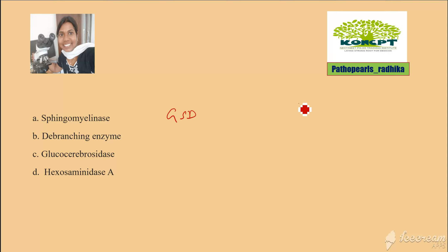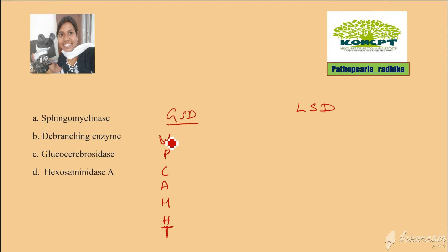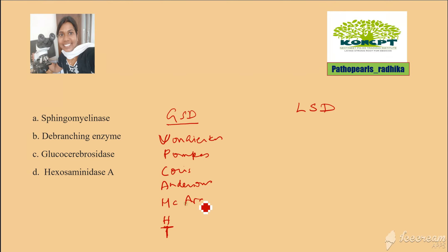You have glycogen storage disorders and lysosomal storage disorders. For glycogen storage disorders, an easy mnemonic to memorize is 'VP came with hypertension.' V is for Von Gierke's disease, P for Pompe's disease, C for Cori's, A for Andersen's, M for McArdle's, H for Hers' disease, and T for Tarui's disease.